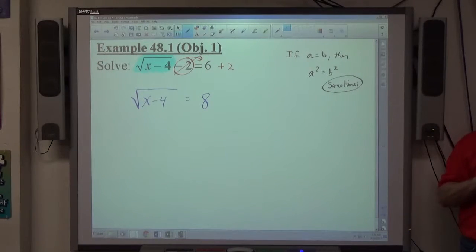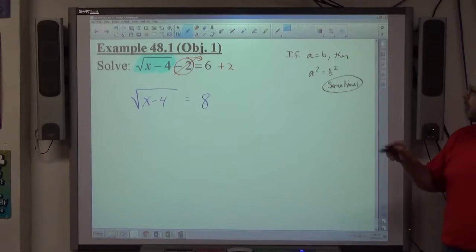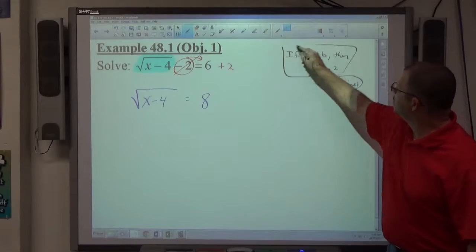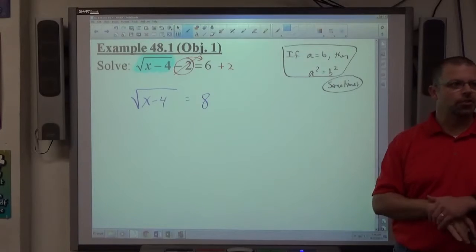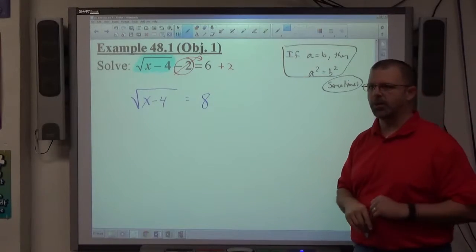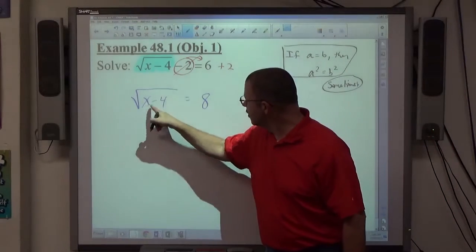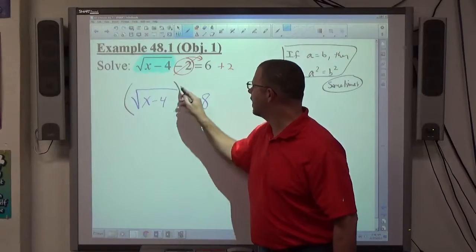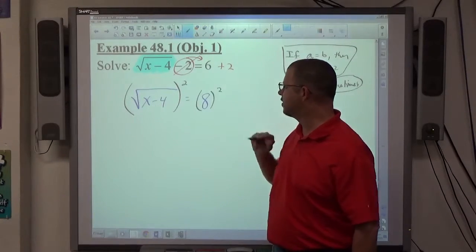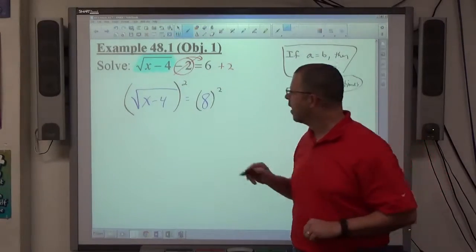So because of the sometimes, I'll show you what we have to do at the end. But if we have an equation, we're going to square both sides, we're going to say that's true, and sometimes we'll deal with it in a little bit. So this equals this, if I square this side, and I square that side, it's still going to be true, I hope.